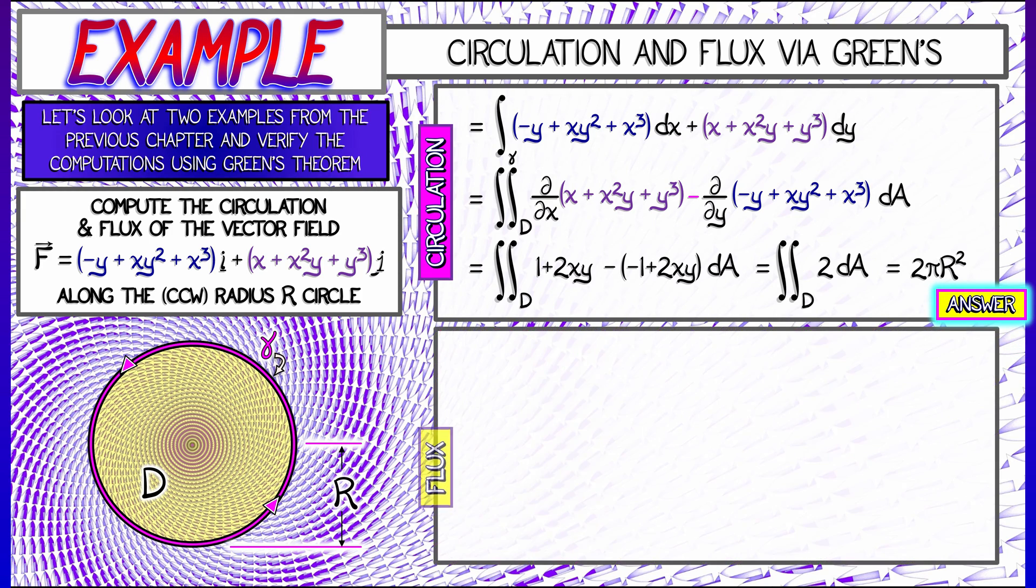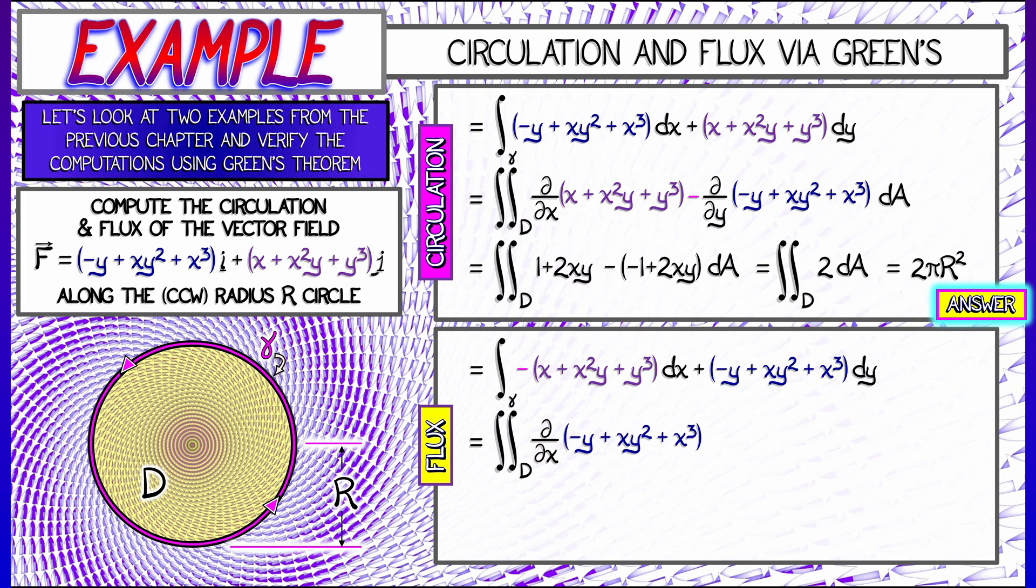Now, for the flux, it's only a little bit harder. We have to integrate the flux one-form. That's minus quantity x plus x squared y plus y cubed dx plus minus y plus xy squared plus x cubed dy. By Green's Theorem, that's the double integral over d of the partial with respect to x of the term in front of dy plus the partial with respect to y of quantity x plus x squared y plus y cubed.